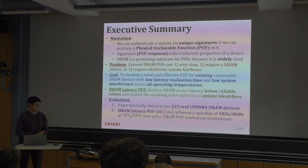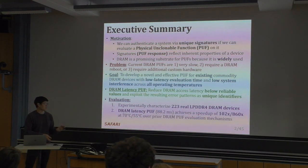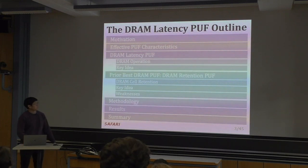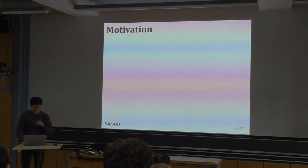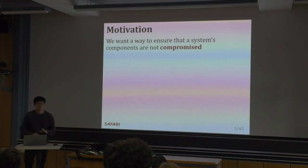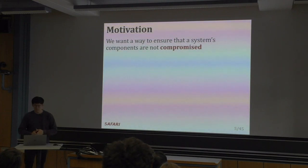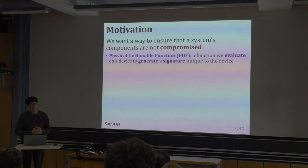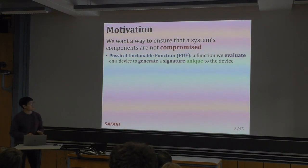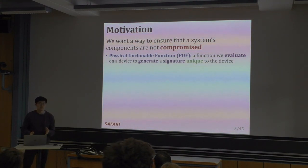The prior DRAM PUF evaluation mechanisms rely on charge leakage rates, which significantly depend on temperature, and at lower temperatures it's much slower. Moving to the motivation: we want a way to ensure that a system's components are not compromised. One example would be if an attacker were to maliciously swap out a healthy component with a malicious one at runtime in order to steal information. We can use a PUF, or a physical unclonable function, and evaluate it on the device to generate a unique signature, authenticate it, and make sure it's actually the device we think we're running on.